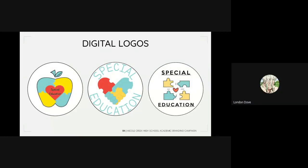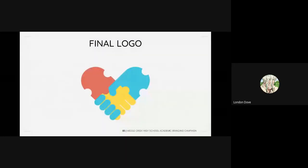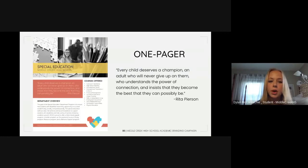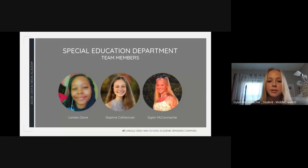From there, we each chose one logo to develop in either Illustrator or Gravit. After receiving feedback from the class, it was decided that Daphne's heart-made-of-hands design in the center would be the one to finalize. After updating the one-pager with the necessary information, we chose a quote from Rita Pearson: 'Every child deserves a champion, an adult who will never give up on them, who understands the power of connection and insists that they become the best they can possibly be.' We are confident that the new logo and one-pager will benefit the special education department.